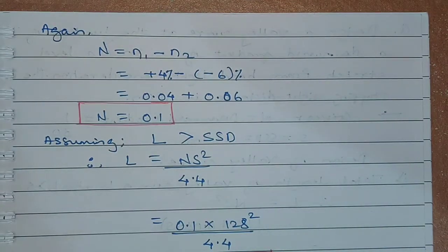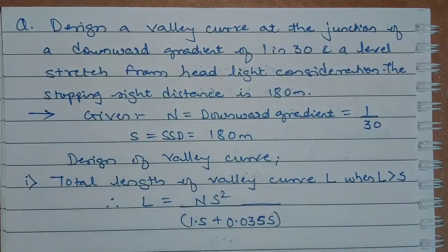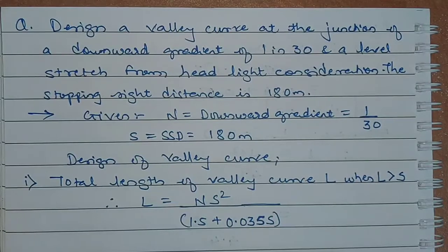We'll see one more numerical on the valley curve now. The statement for the second numerical on the vertical curves is as follows.